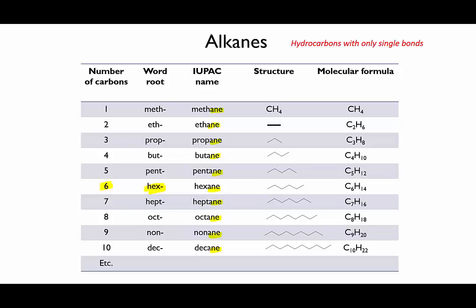Third, I've put in the skeletal or stick structure for each molecule. Note that you can't draw a stick structure for methane, since in stick structures you only show the carbon-carbon bonds. It would also be unusual to use a stick structure for ethane, since it might be mistaken for a dash. Fourth, look carefully at the molecular formula for each of these compounds. Can you see a pattern? Pause the video and see if you can work out an algebraic way to write it down. For instance, if you have an alkane with N carbons, what would its molecular formula be?